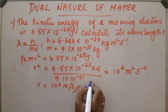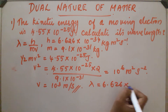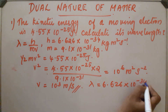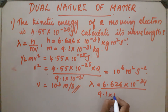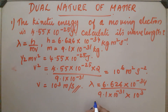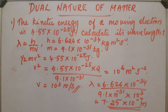So lambda = h/mv = 6.626 × 10⁻³⁴ divided by 9.1 × 10⁻³¹ × 10³. After calculation, the value obtained is 7.25 × 10⁻⁷ meter. This is the wavelength lambda. So like this we can calculate the wavelength of an electron.